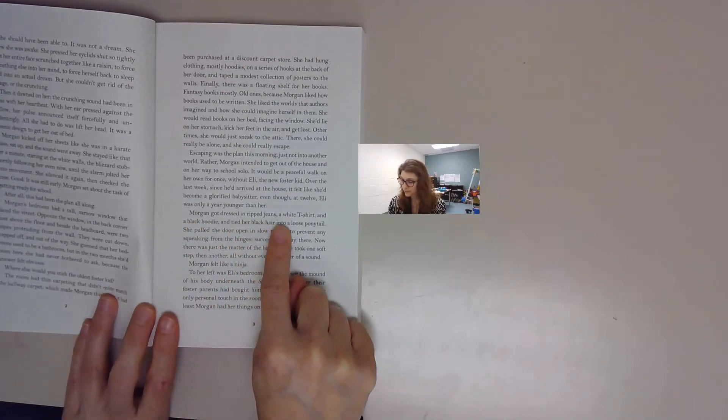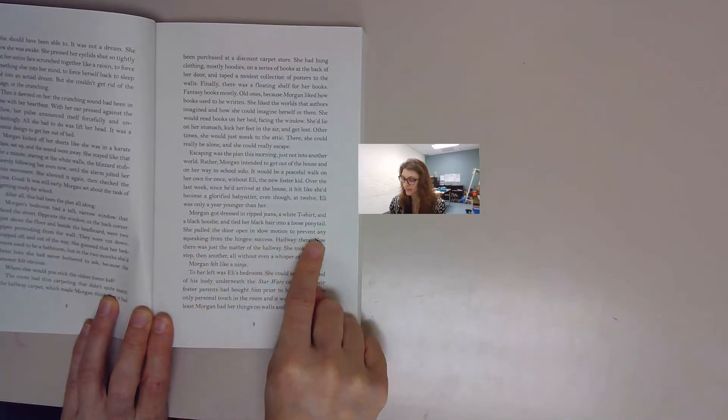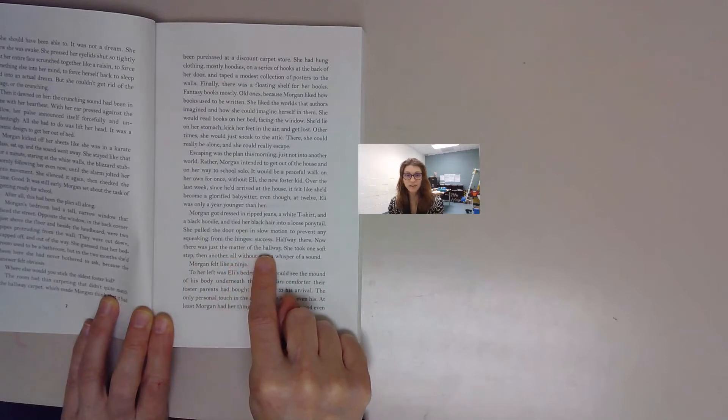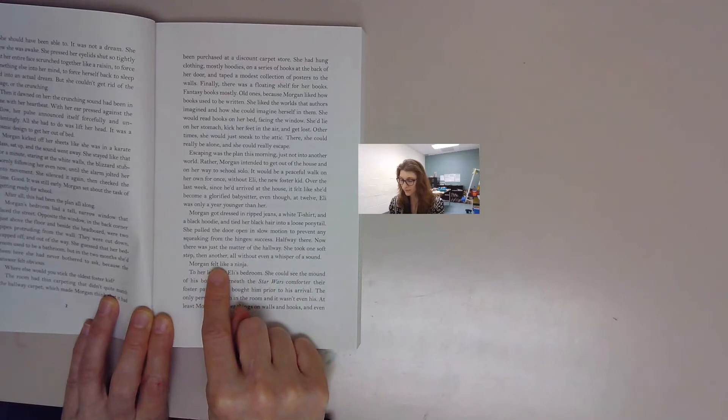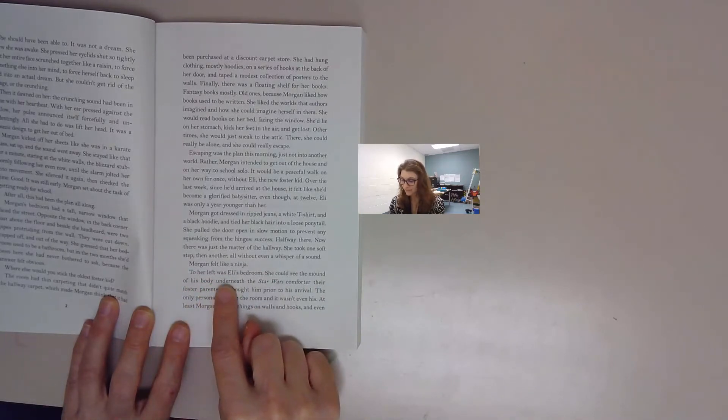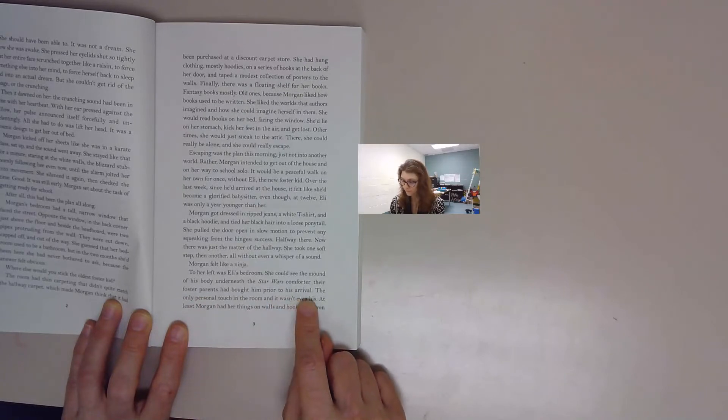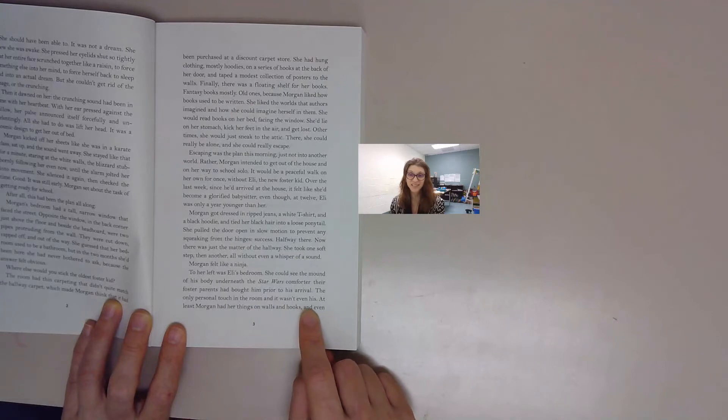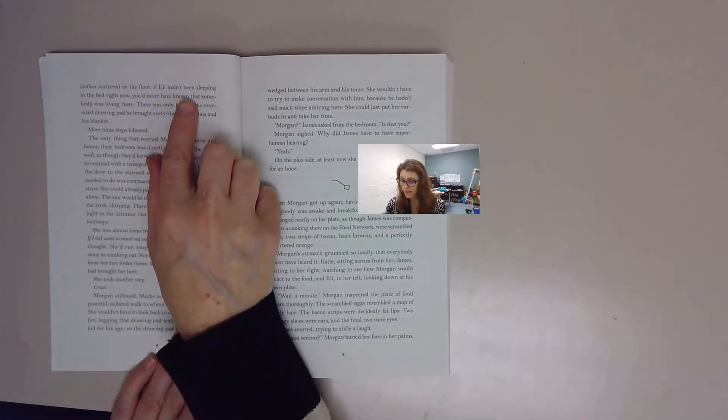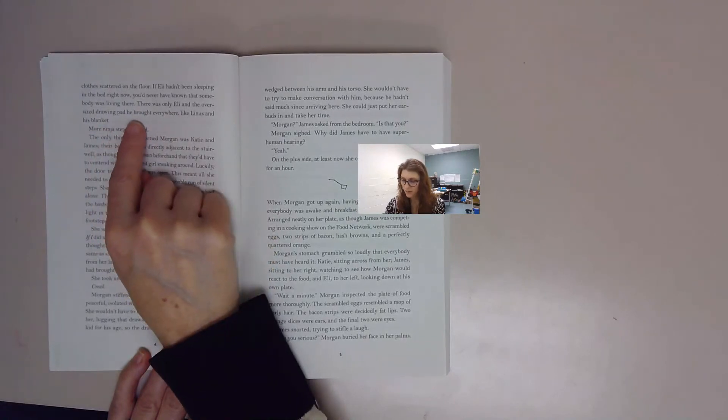Morgan got dressed in ripped jeans, a white t-shirt, and a black hoodie, and tied her black hair into a loose ponytail. She pulled the door open in slow motion to prevent any squeaking from the hinges. Success, halfway there. Now there was just the matter of the hallway. She took one soft step, then another, all without even a whisper of a sound. Morgan felt like a ninja. To her left was Eli's bedroom. She could see the mound of his body underneath the Star Wars comforter their foster parents had bought him prior to his arrival, the only personal touch in his room, and it wasn't even his. At least Morgan had her things on walls and hooks and even clothes scattered on the floor. If Eli hadn't been sleeping in the bed right now, you'd have never known that somebody was living there. There was only Eli and the oversized drawing pad he brought with him everywhere.